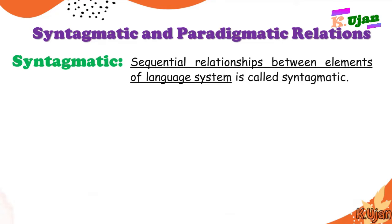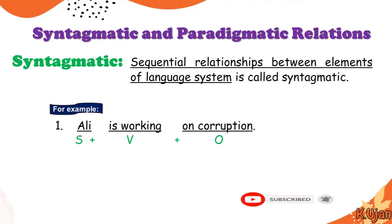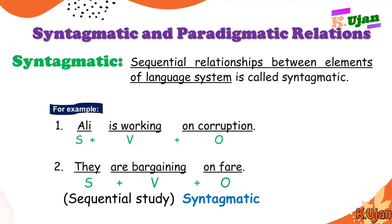Syntagmatic: sequential relationships between elements of a language system is called syntagmatic. So sequential relationships between elements of language are known as syntagmatic. For example, 'Ali is working on corruption' — the sentence is composed of subject, verb, and object, which is the sequential relationship between the elements of language. This sequential study of elements of language is known as syntagmatic. Another example: 'They are bargaining on fear.' Every sentence is composed of sequential relationships as subject-verb-object. This sequential study of language in grammar is known as syntagmatic relations in linguistics.